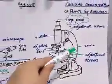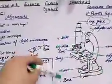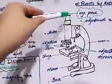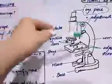Then, the second part is the arm. When we have to hold the microscope, we use the arm to hold it. Then, the tube. The tube of the microscope has lenses on both sides. One end is called the eyepiece because we look through it with our eyes.